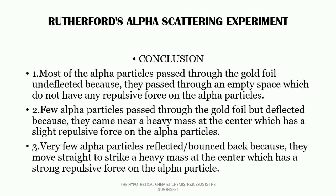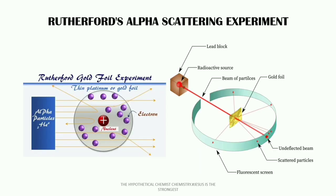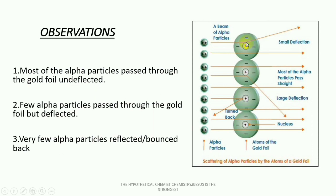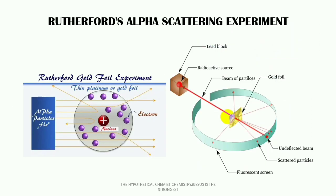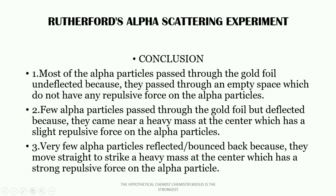Secondly, few alpha particles passed through the gold foil but were deflected because they came near a heavy mass at the center which has a slight repulsive force on the alpha particles. We can see that from the diagram — the heavy mass here was able to repel and deflect those particles.